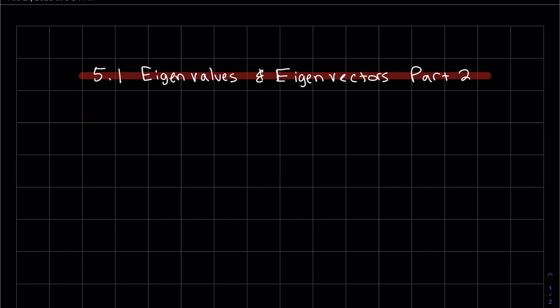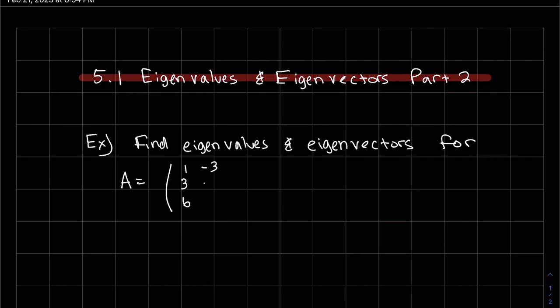This is 5.1 find eigenvalues and eigenvectors part two. All I'm going to do in this video is find the eigenvalues and eigenvectors for a three by three. So we're going to start off with finding the eigenvalues of the following matrix.